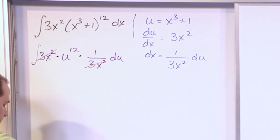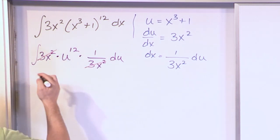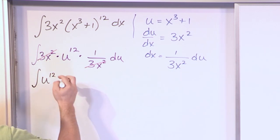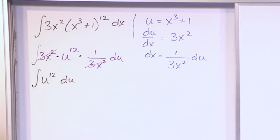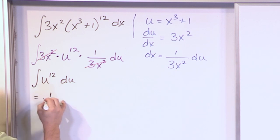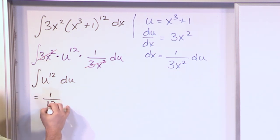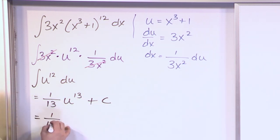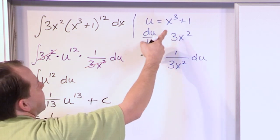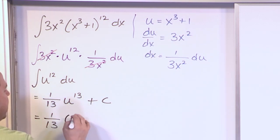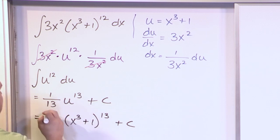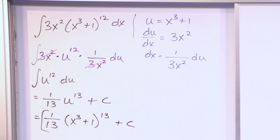3x squared cancels with 3x squared, and so we have the integral of u to the 12th power du. This is just a simple polynomial. It's 1 over 13 times u to the 13th plus a constant. Substituting back, u is x cubed plus 1, so the answer is 1 over 13 times (x cubed plus 1) to the 13th power plus a constant.